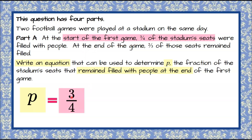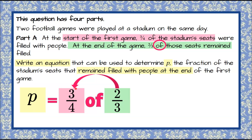So we know that three-fourths of the stadium had people in their seats. At the end of the game, two-thirds of those seats remained filled. So we know two-thirds of the three-fourths were filled at the end of the game. When we do this, two-thirds of three-fourths means we're going to multiply. If you happened to write two-thirds multiplied by three-fourths, that's equivalent because multiplication is a commutative operation.